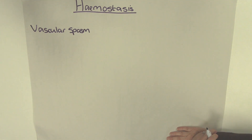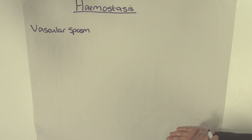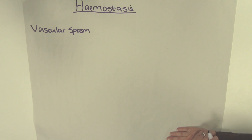Vascular spasm is caused when arteries and arterioles are damaged. Specifically, it is when the smooth muscle which circles around the walls of these vessels is damaged. This causes them to contract immediately, which can reduce blood loss for several minutes to several hours and allows time for the other haemostatic mechanisms to operate.